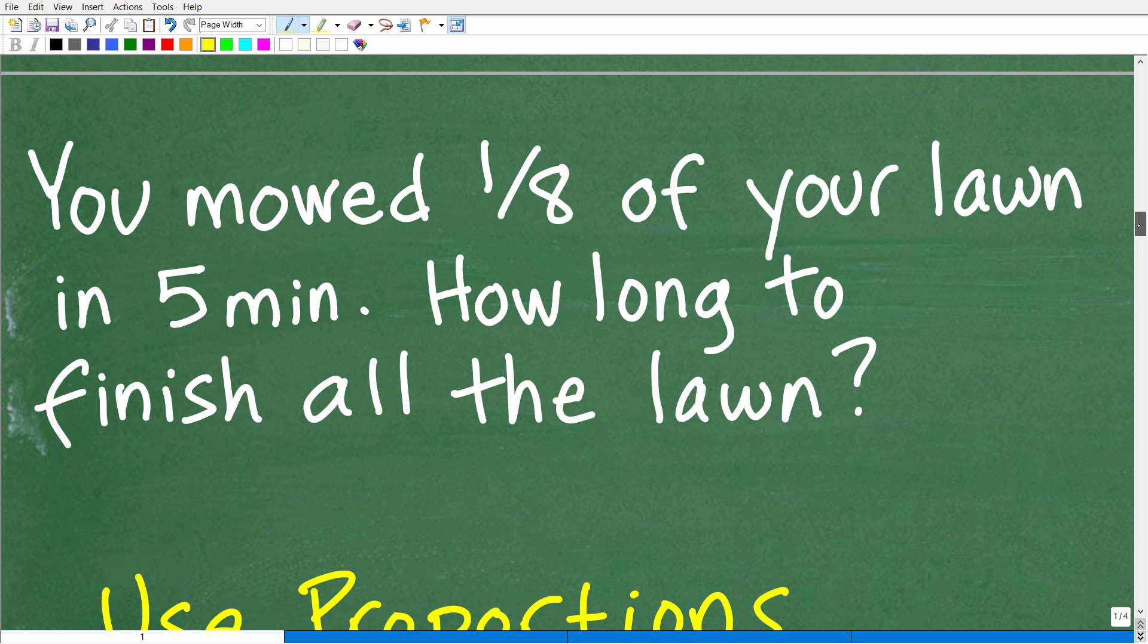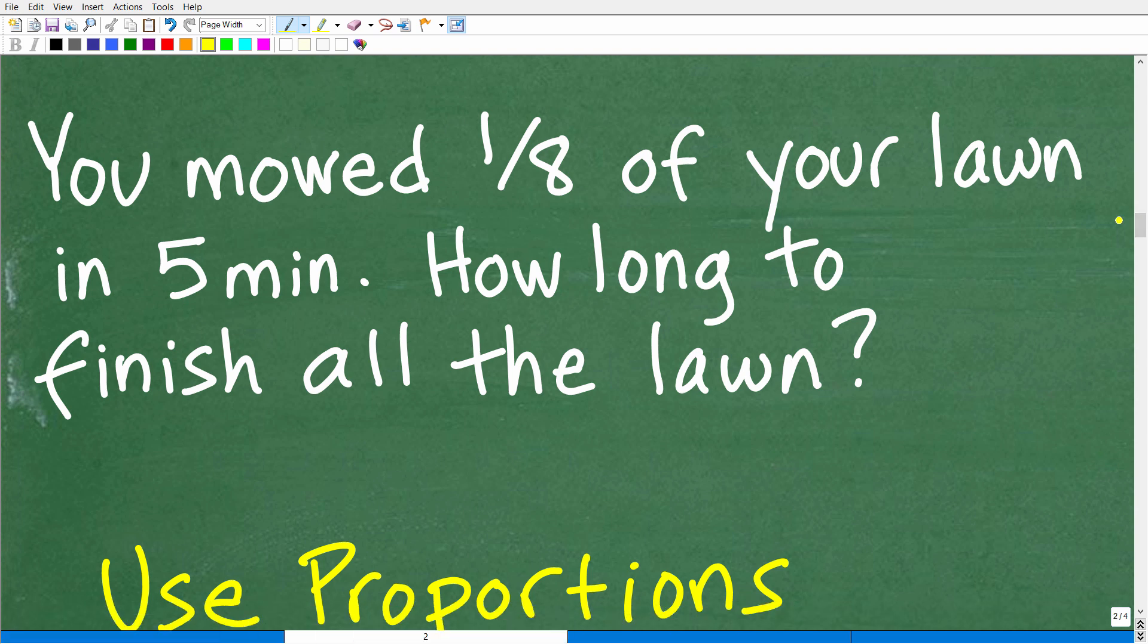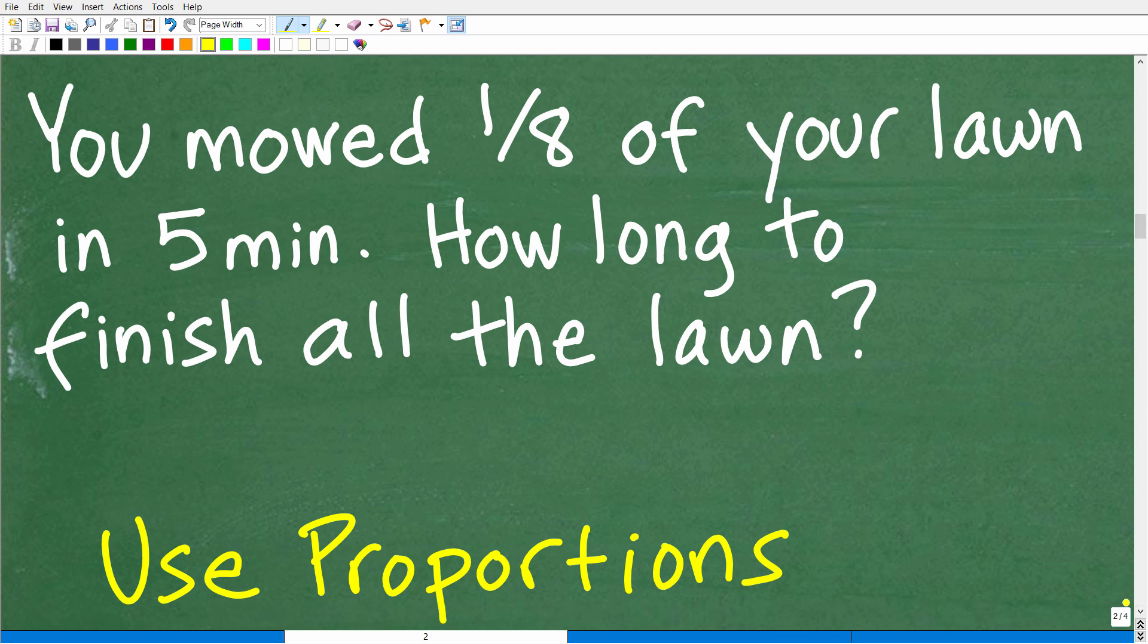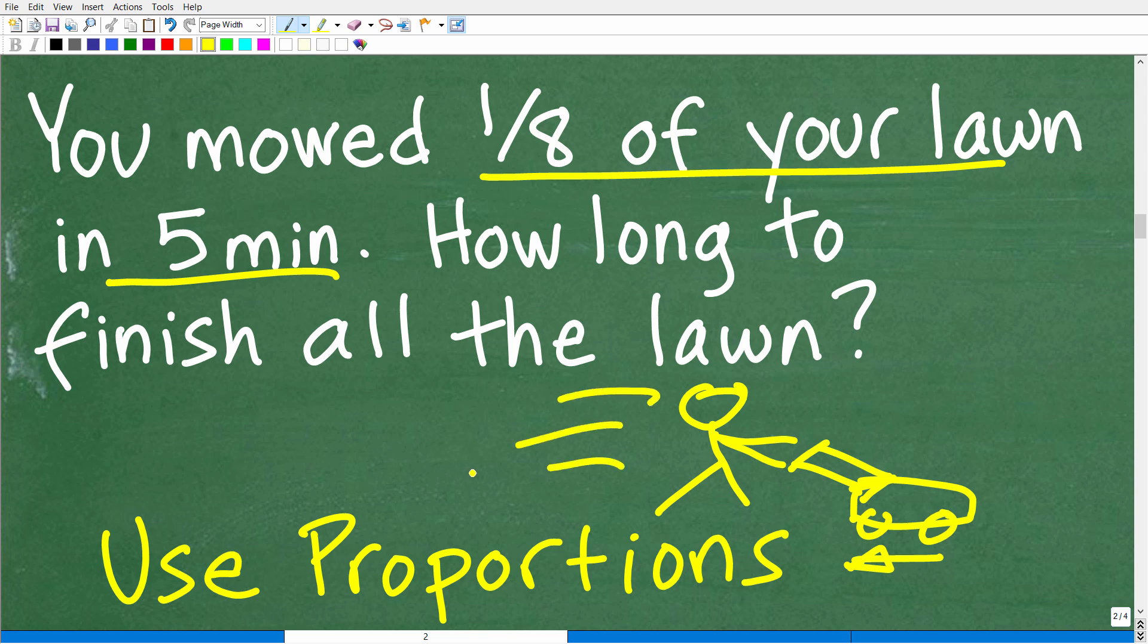So let's get back to this problem. And what we're going to do is use some algebra and some other things to solve this problem. We're going to use something called proportions. So again, we have the same problem here. You mowed one eighth of your lawn in five minutes. How long to finish the lawn? Well, if we notice in the problem, what we have is some sort of rate. How fast we're doing the lawn, or how fast, in other words, someone's out here doing the lawn and you're thinking how fast, or what's the rate of me doing this lawn? Well, I'm doing one eighth of the lawn every five minutes. That is a rate, if you will.